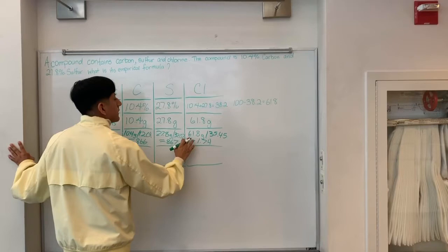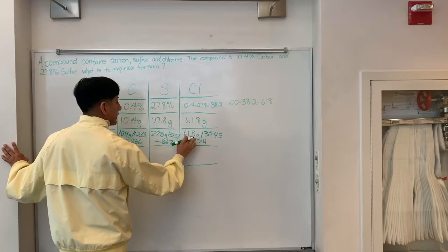And to find the moles of chlorine, we divide 61.8 grams by 35.145, which gives 1.866.